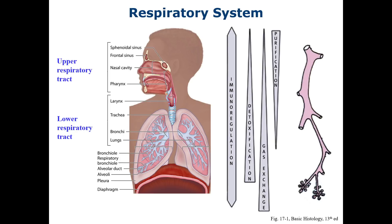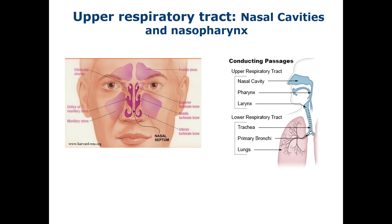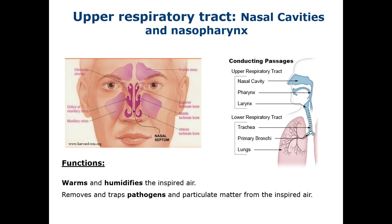Histologically and functionally, the respiratory system has two components: the conducting zone, which contains all of the elements that condition air and bring it into the lungs, and the respiratory zone, where gas exchange actually occurs. The first portion of the conducting zone is the upper respiratory tract, which consists of the nasal cavities, paranasal sinuses, and nasopharynx. Their main functions are olfaction, to warm and humidify inspired air, and protection — removing and trapping pathogens and particulate matter. These regions have a mucosa containing pseudostratified ciliated columnar, or respiratory epithelium, except for portions of the nasal cavities which have olfactory epithelium, which we'll cover later.